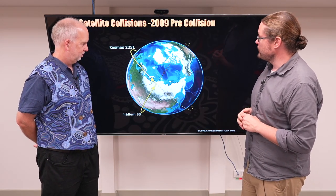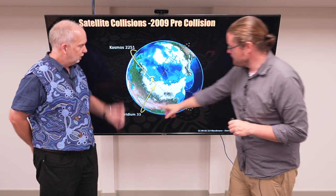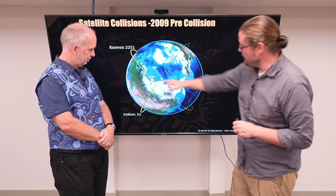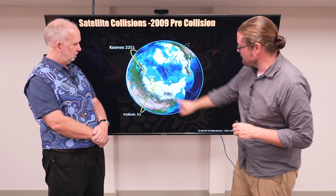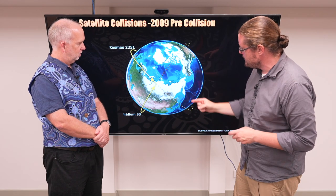This is what it looks like. Pre-collision, we have the Cosmos satellite coming around and the Iridium satellite here. In theory, the orbit should have kept going - the Cosmos satellite would have kept going like this, the Iridium satellite like that. But they collided.